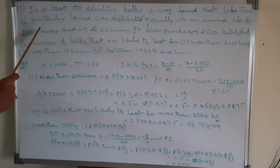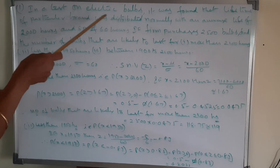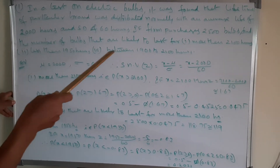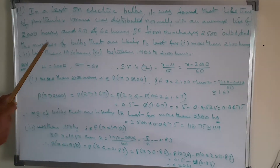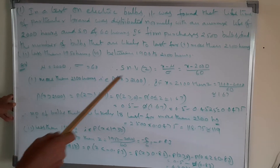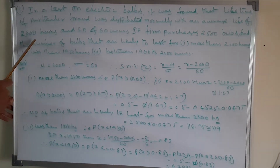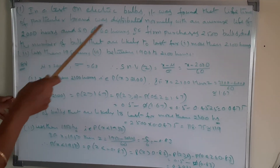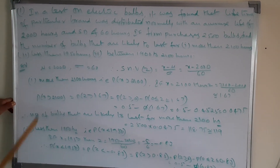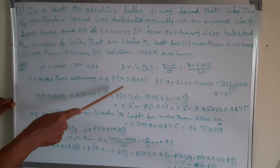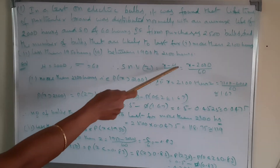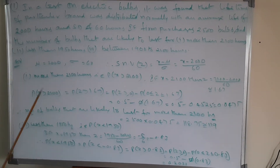Given values: the lifetime of the particular brand is distributed normally with an average life of 2000 hours and standard deviation of 60 hours. So mu is equal to 2000 and standard deviation sigma is equal to 60. The standard normal variate z is equal to (x minus mu) divided by sigma, and we substitute the mu and sigma values to get z.